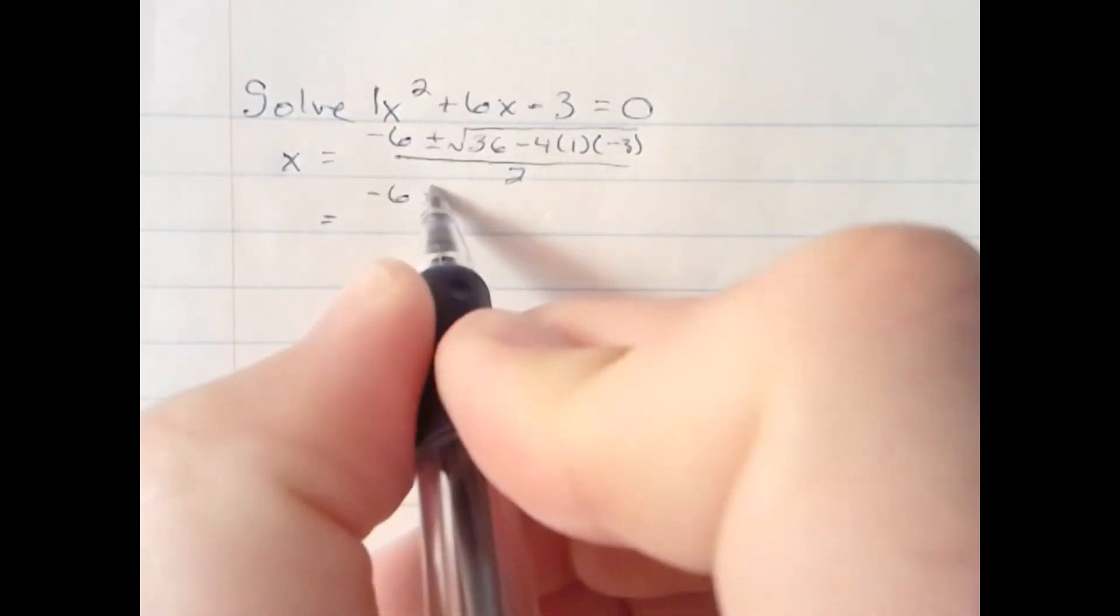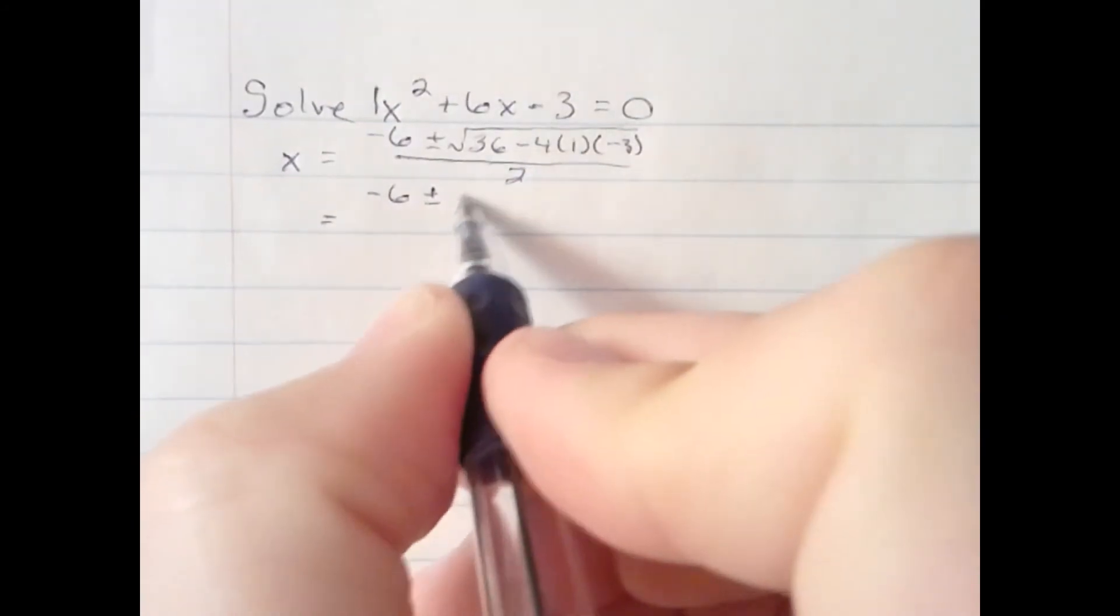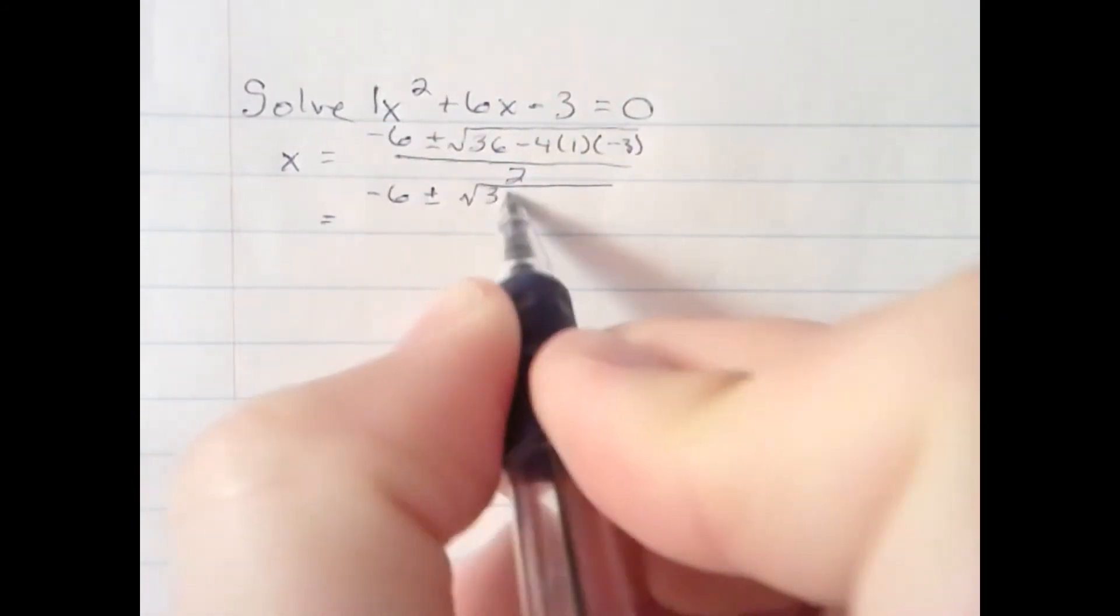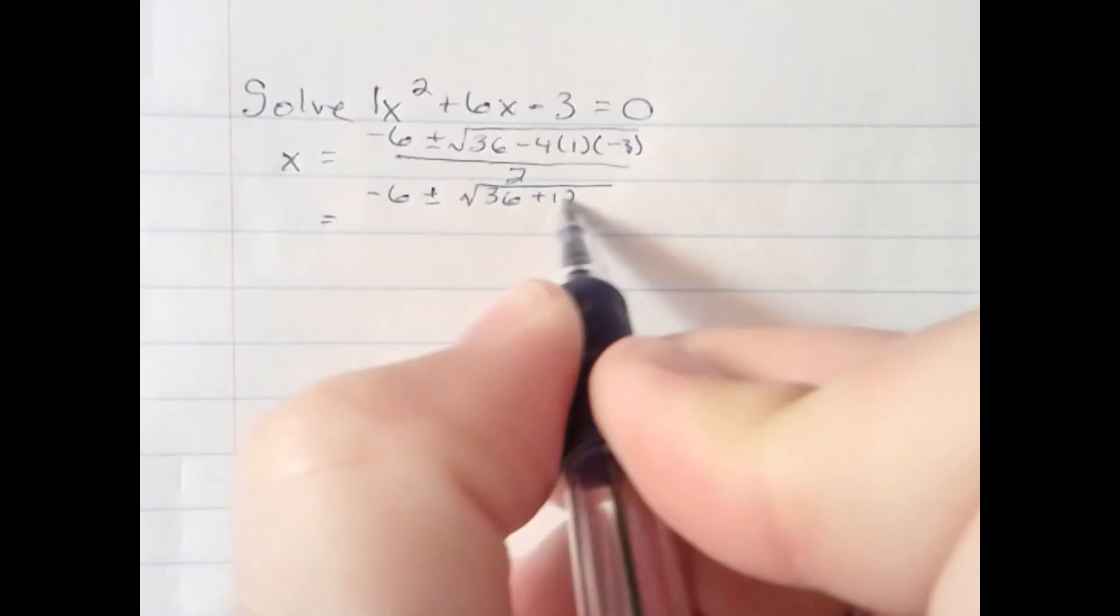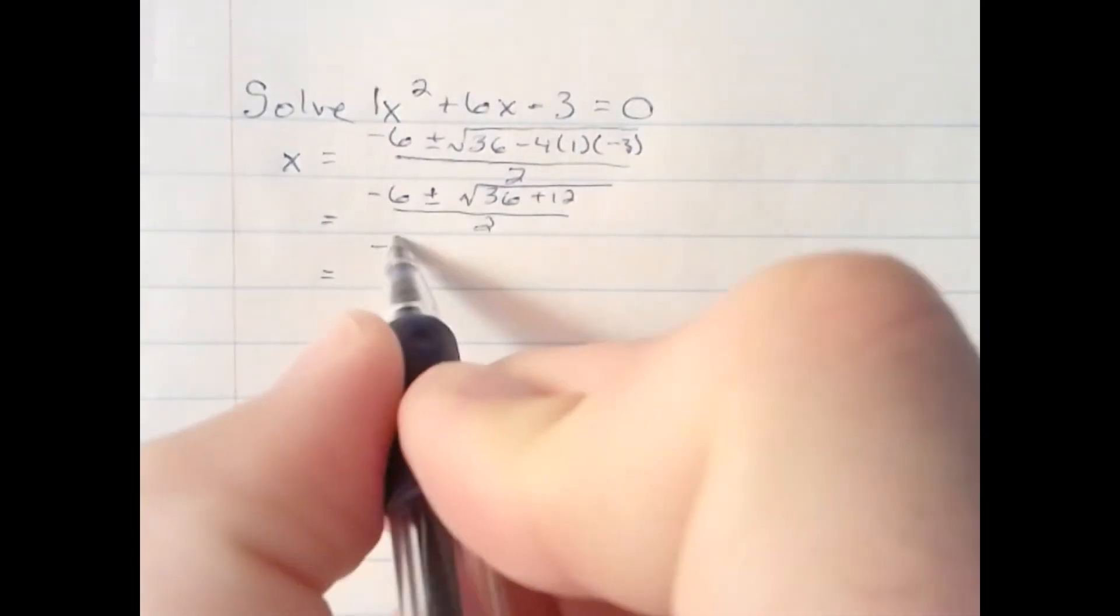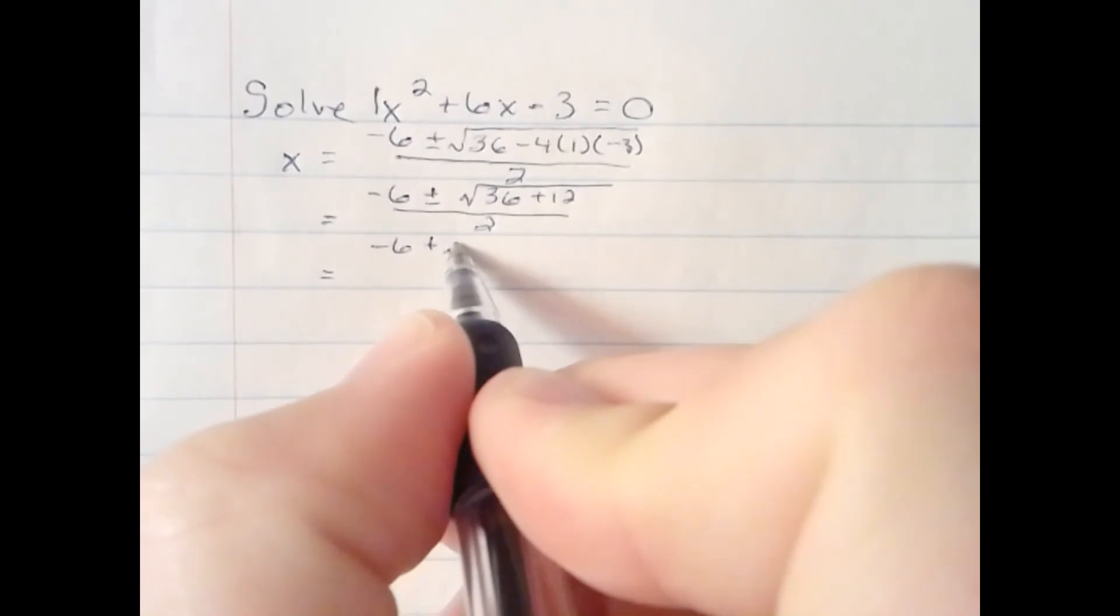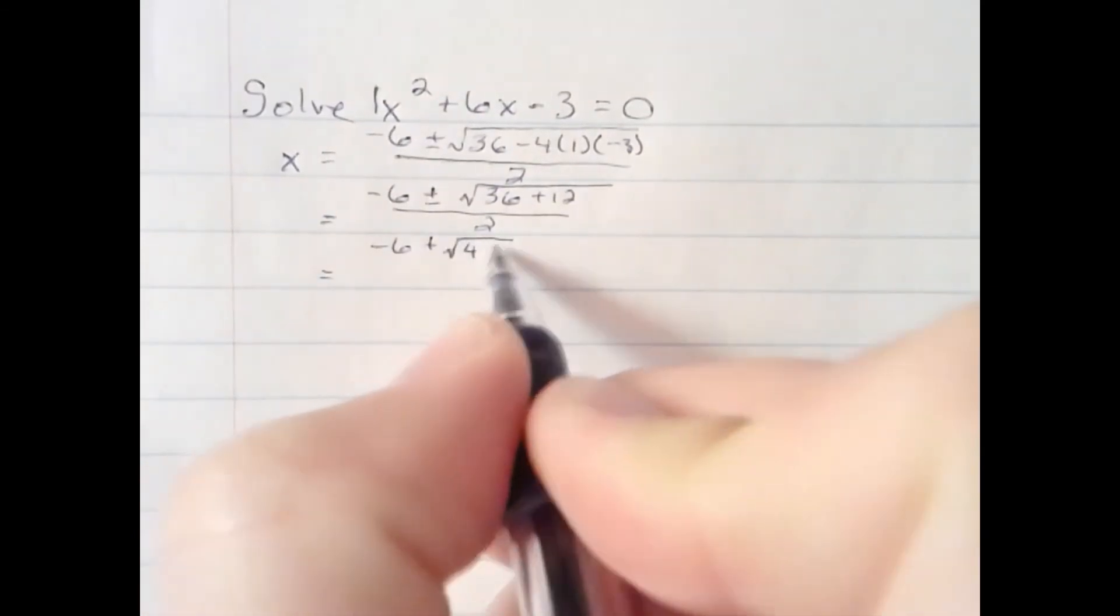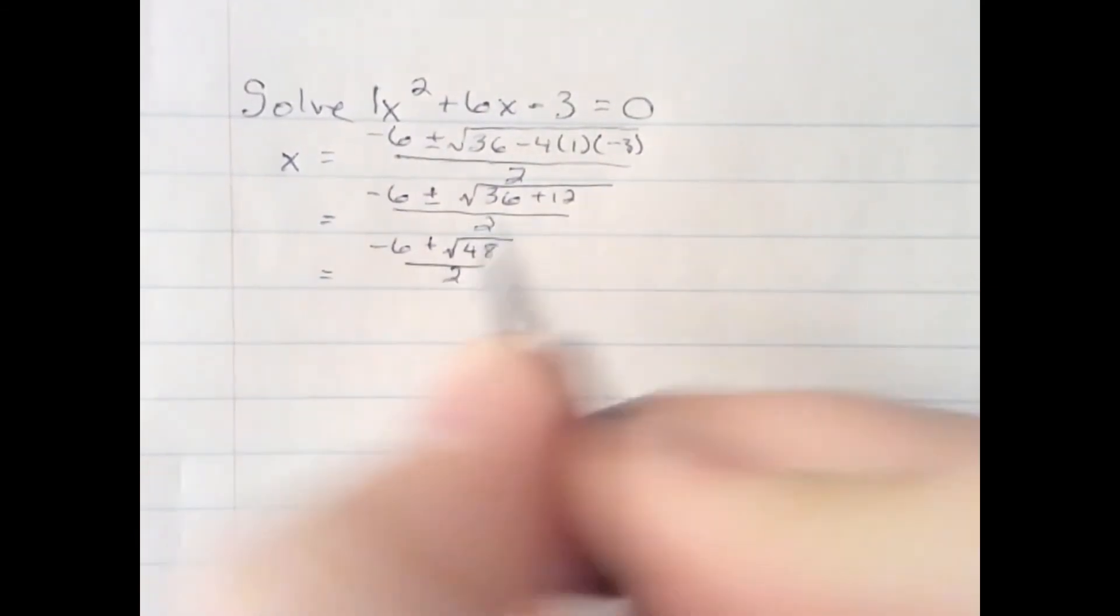Simplify: we have negative 6 plus or minus square root of 36 plus 12. Negative 6 plus or minus square root of 36 plus 12 is 48, over 2.